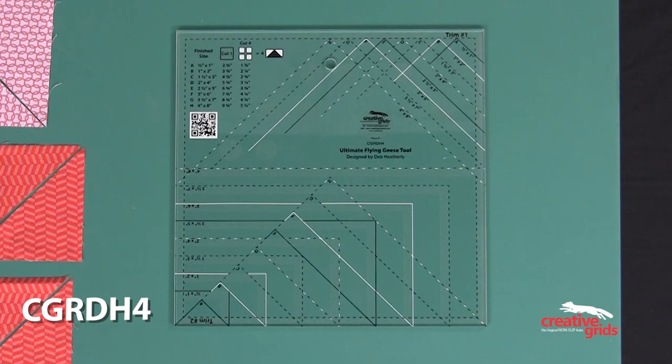The Creative Grids Ultimate Flying Geese tool designed by Deb Heatherly is a must-have ruler in every quilter's toolbox, making flying geese units quickly, easily, and accurately four at a time.